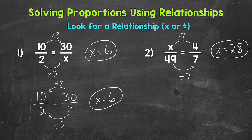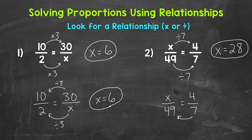Now we can also go the other way and use multiplication. So x to 49 equals 4 to 7. We know 7 times 7 equals 49, so let's use that information to figure out x. Well, 4 times 7 equals 28. So we get 28 that way as well.